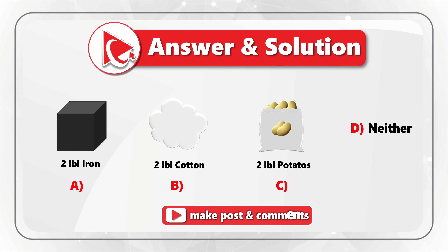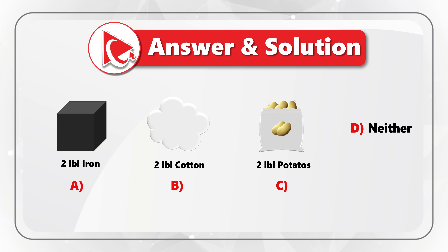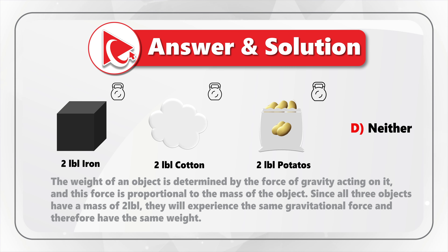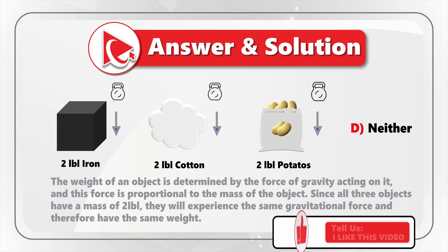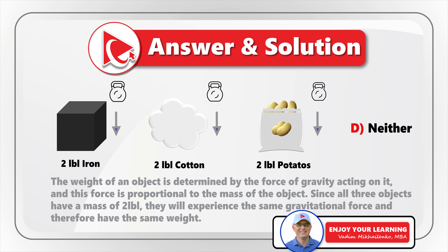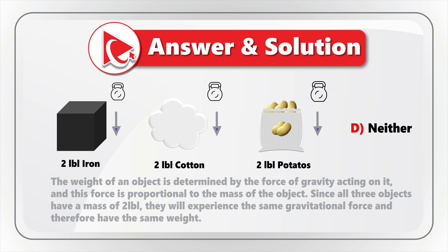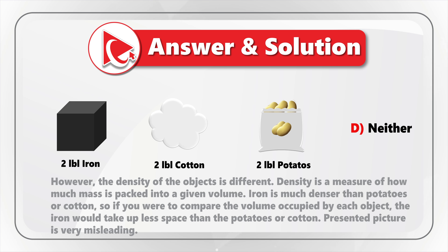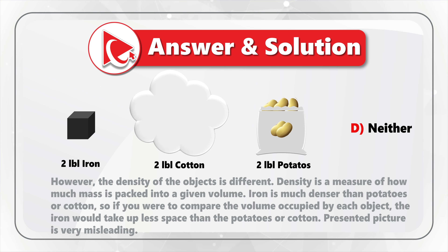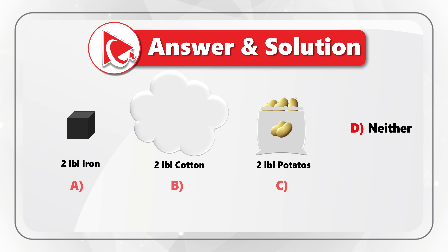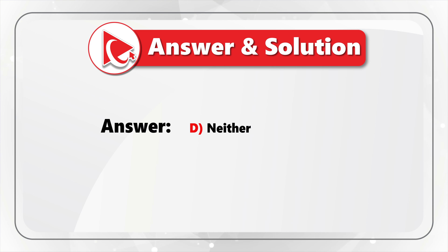As you might have figured out, all three objects — two pounds of iron, two pounds of potatoes, and two pounds of cotton — will have the same weight. The weight of an object is determined by the force of gravity acting on it, which is proportional to the mass. Since all three objects have a mass of two pounds, they experience the same gravitational force. The confusion is that the density of these objects is different — iron is much denser than potatoes or cotton — meaning iron takes up less volume. The correct answer is Choice D: neither one, since no object is the heaviest.